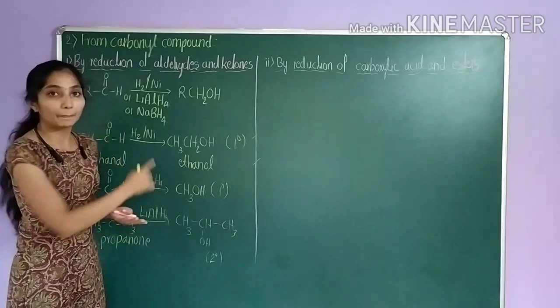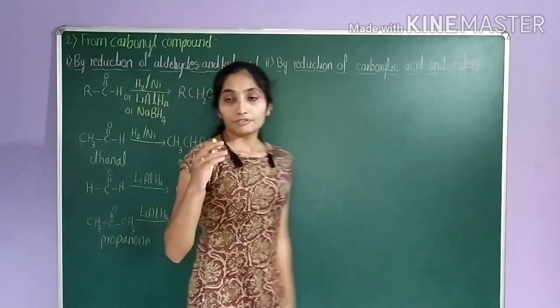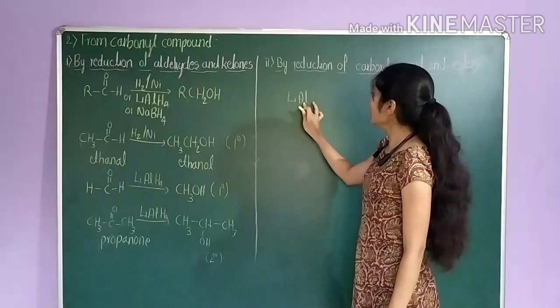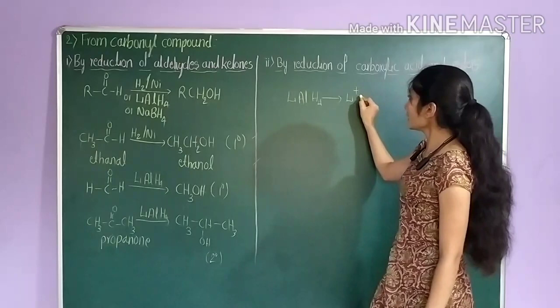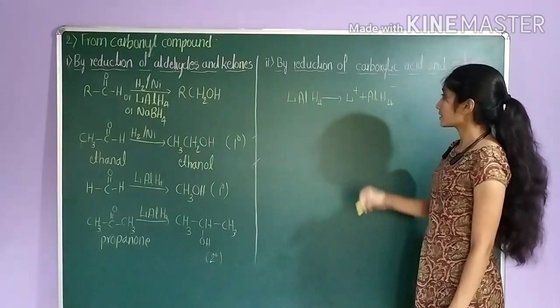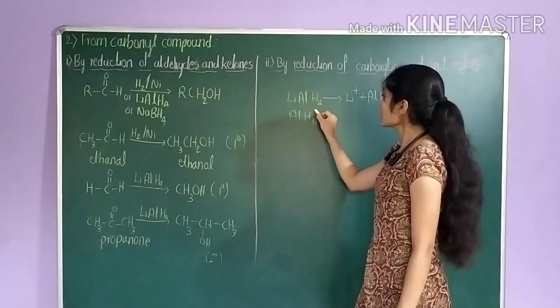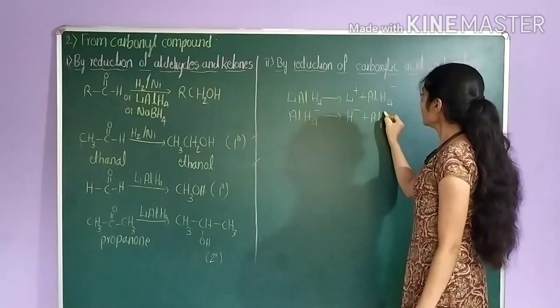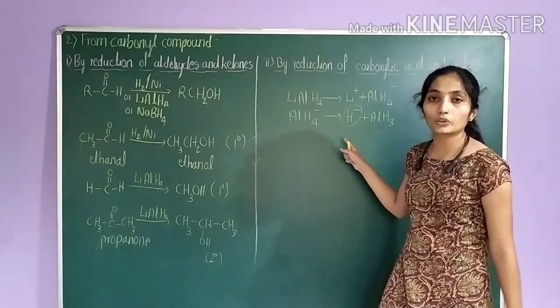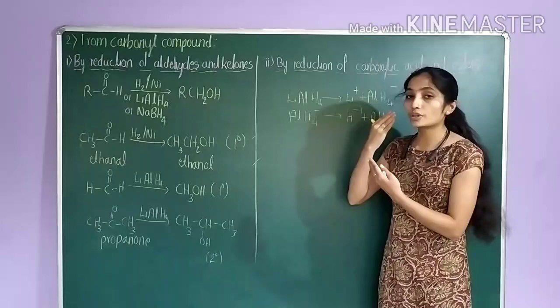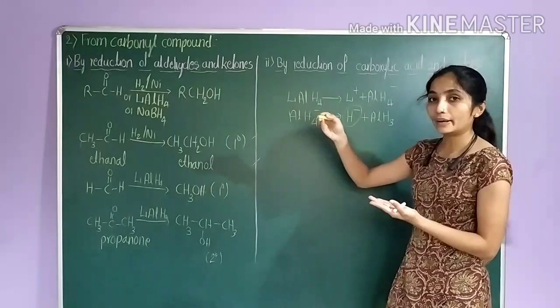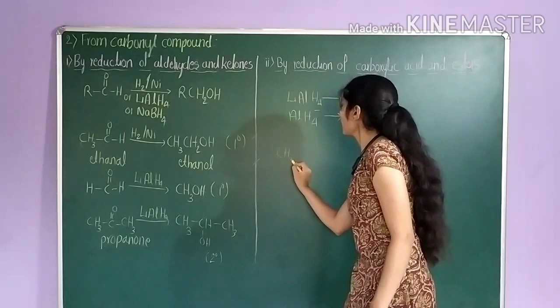Now let us see the mechanism. Lithium aluminium hydride dissociates into Li+ and AlH4–. This AlH4– again dissociates to give hydride ion H– plus AlH3. This H– is a nucleophile — a nucleus-loving species — that will attack on the electron-deficient center, that is, the carbonyl carbon in aldehyde or ketone. Let us take an example of propanone, CH3–C(=O)–CH3.